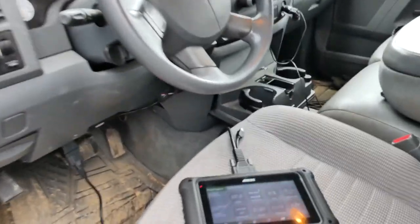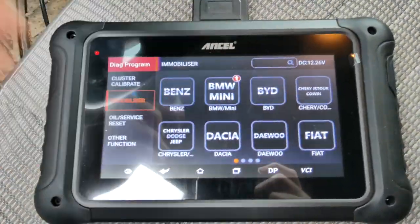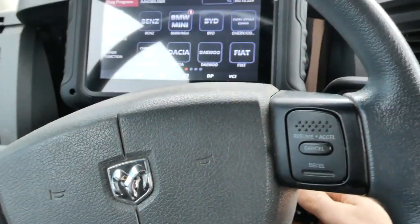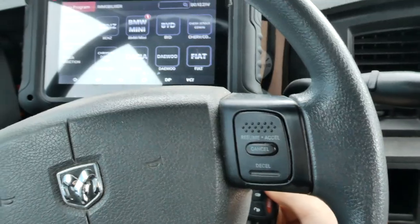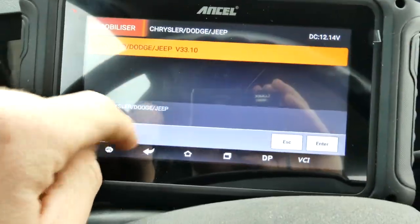All right, so now we're at the truck and we've got our DP500 hooked up through the OBD2 port. And we're going to take our key and see what happens. All right, so we've got our key here in. You can see we turned to the on position and we're going to hit the immobilizer.